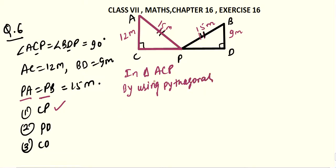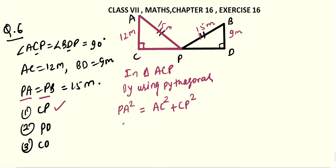You will get 90 degrees at C, that means the side opposite to angle C is AP. So AP will be your hypotenuse. So hypotenuse squared is AP squared. AC you can take as perpendicular, so AC squared plus CP is your base, so write CP squared. AP, that is PA, is 15. So you can write PA: value of PA is 15. So 15 squared equals to AC — value of AC is 12 — so 12 squared plus CP squared.